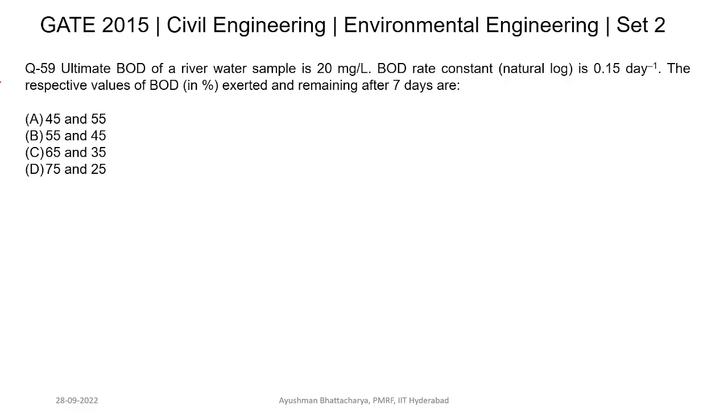This is question 59 from GATE 2015 Set 2. The question states: Ultimate BOD of a river water sample is 20 mg/L, BOD rate constant is 0.15 per day. Calculate the respective values of BOD in percentage exerted and remaining after seven days.